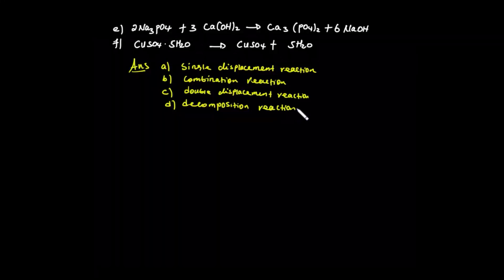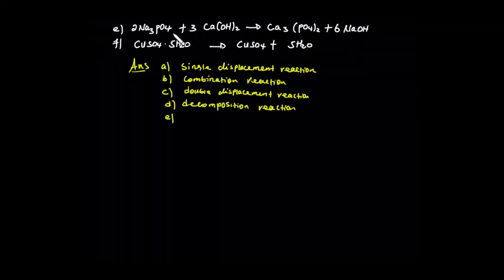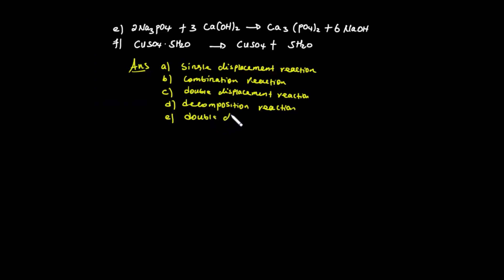For E, sodium phosphate reacts to give calcium phosphate and sodium hydroxide. Looking at the products, there are two new compounds formed from two reacting compounds, so this is a double displacement reaction.